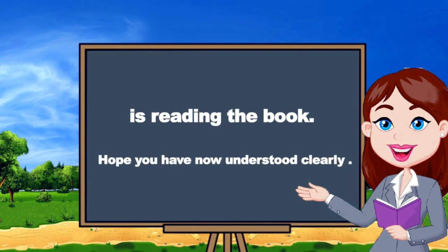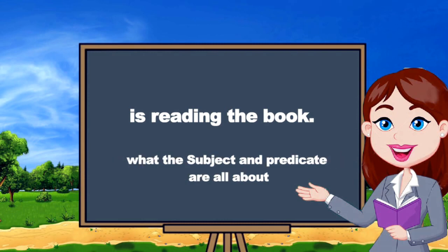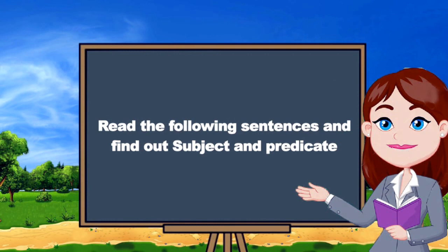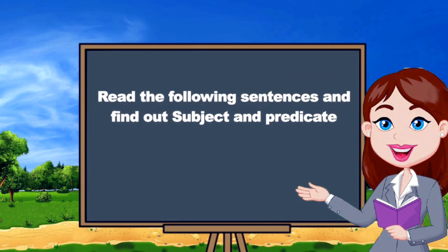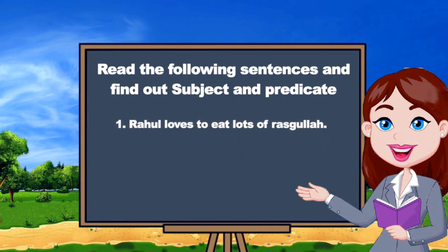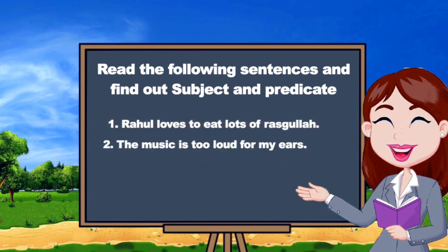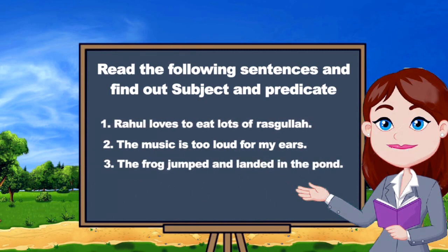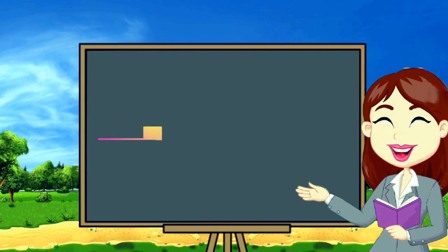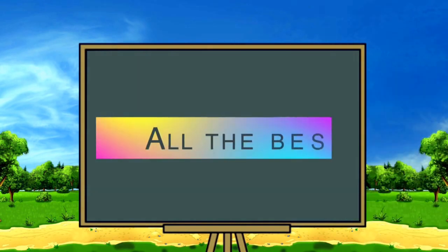Hope you have now understood clearly what subject and predicate are all about. Now it's time for homework. Read the following sentences and find the subject and predicate. Number one: 'Rahul loves to eat a lot of rasgulla.' Number two: 'The music is too loud for my ear.' Number three: 'The frog jumped and landed in the pond.' Number four: 'The girls were playing hide and seek.' Keep practicing more and more sentences to improve your reading skills. All the best. Thank you.